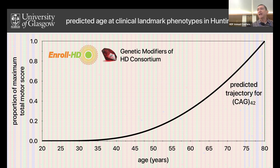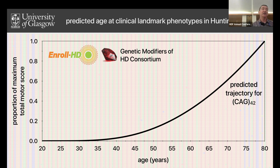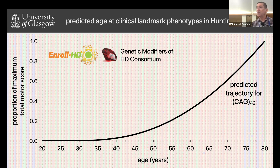Age of onset is great in that there's one number for everybody, but it's somewhat subjective as to when symptoms actually start, and trying to go backwards to determine when symptoms started can be quite problematic. So we've also been working with statisticians in Iowa to use other longitudinal data to come up with additional types of phenotypes that are potentially more objective than age of onset.